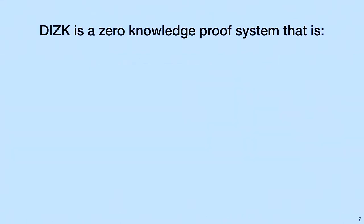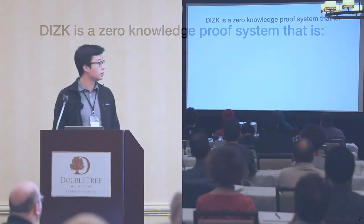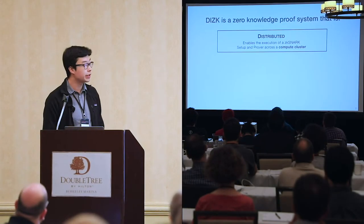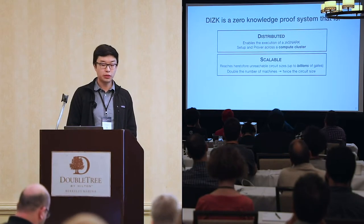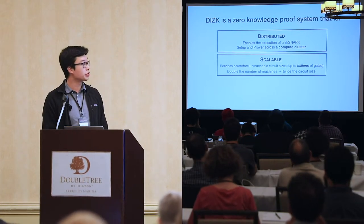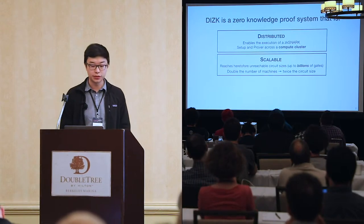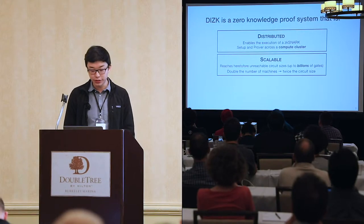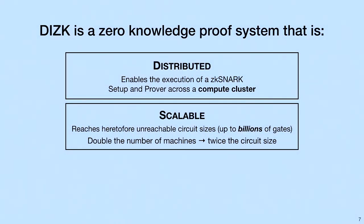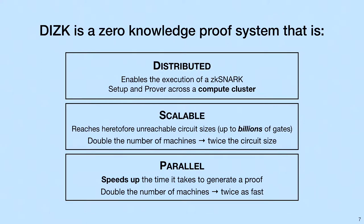So we asked ourselves, what could we do and what would be a stepping stone for enabling applications like this? We present DIZK. DIZK is a zero-knowledge proof system that is distributed, meaning it enables the execution of a ZK-SNARK setup and prover across a compute cluster. It is scalable, meaning it reaches heretofore unreachable circuit sizes up to billions of gates. The pattern we see is that if we double the number of machines, we can support roughly twice the circuit size. Lastly, it is parallel, meaning it speeds up the time it takes to generate a proof. As we double the number of machines, it can run roughly twice as fast.